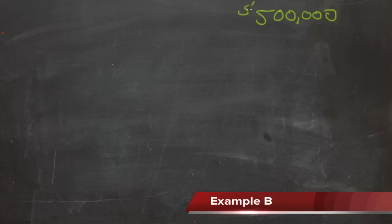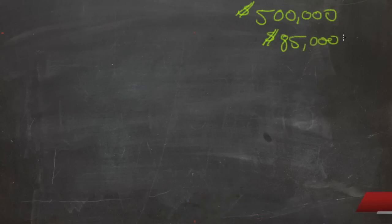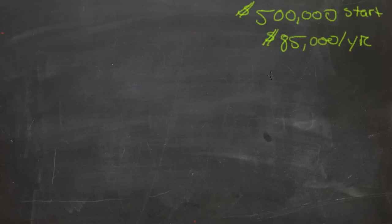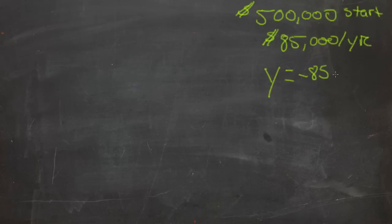Here we have a question about a small business. It says that the business started off with a debt of five hundred thousand dollars in startup costs, and that it thinks it can pay off the debt at eighty-five thousand a year. So if we let y be their current debt, we can figure out what y is by taking negative eighty-five thousand times x years plus the five hundred thousand that they started with.